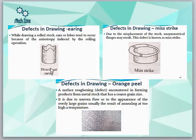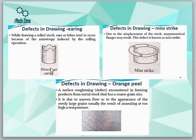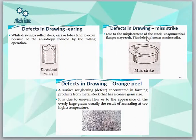Next is earring, which is an important defect caused mainly by anisotropy induced by the rolling operation. Anisotropy means having different properties in different directions. This earring defect is mainly because of that anisotropy. Next is miss strike — if the stock is misplaced or misaligned by mistake, the product will be unsymmetrical. Although this may seem minor, it is still covered in the studies.